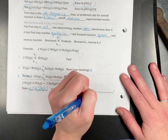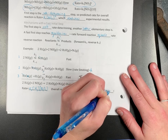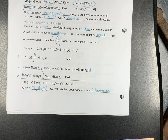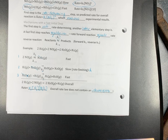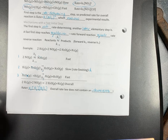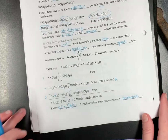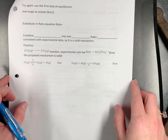Our overall rate law cannot contain an intermediate. The fast and slow designations will be given to you — you won't have to calculate which step is faster. However, you can use the mechanism to calculate the overall rate constant for the reaction.